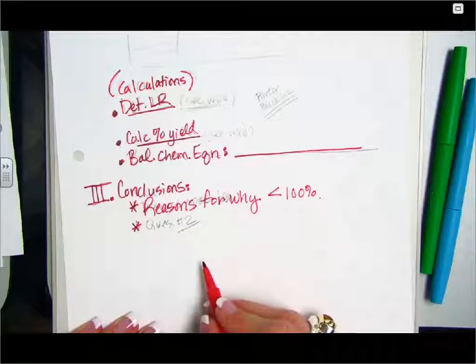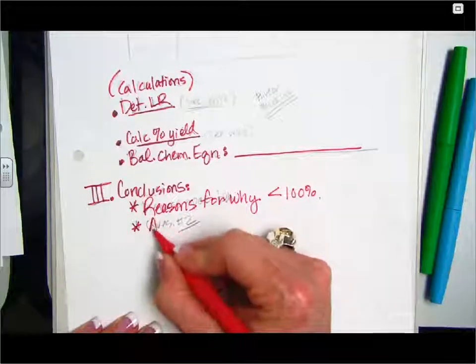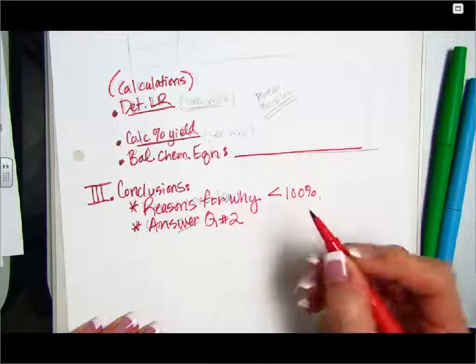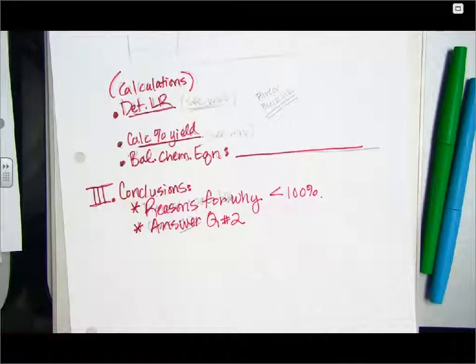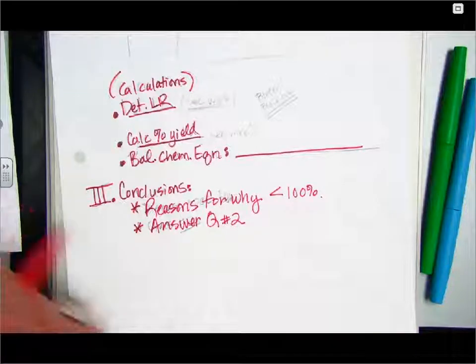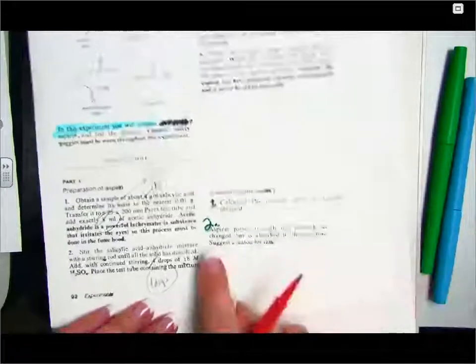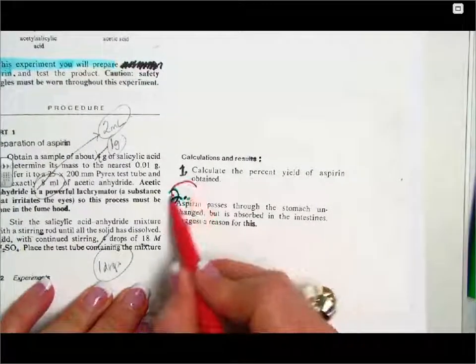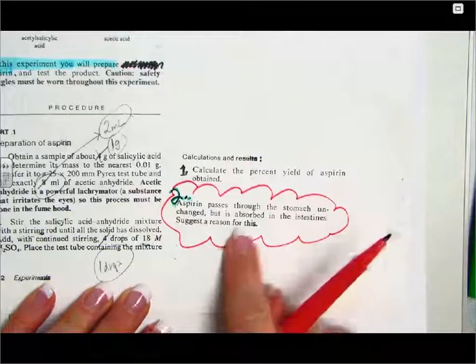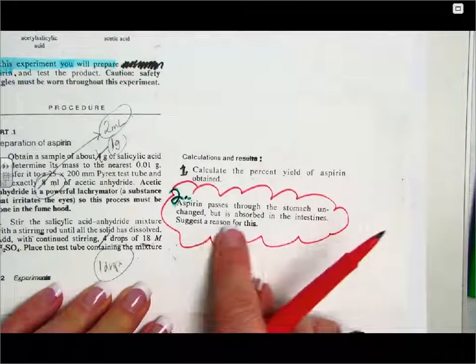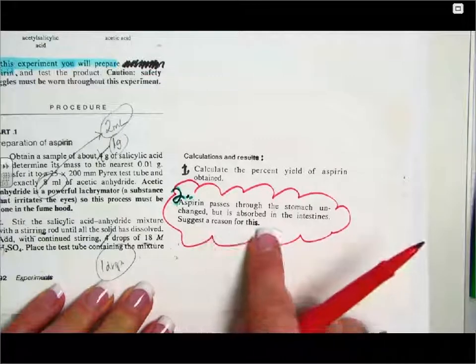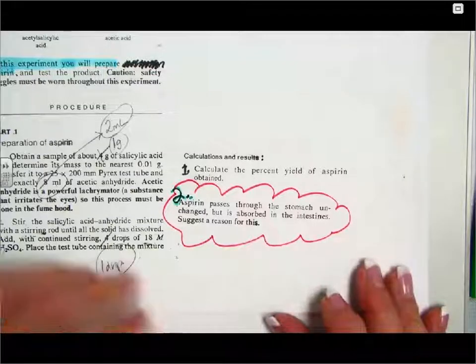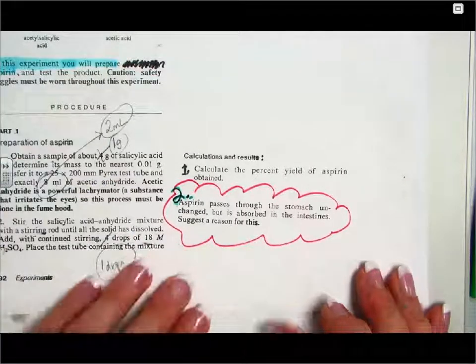Also, in this final section, I want you to answer question number two from your lab sheet. So let me point out where that is. Question two from your lab sheet is here. This is our lab sheet that we use for the procedure. So here's question two. This is what I'm referring to. So the question says, aspirin passes through the stomach unchanged but is absorbed in the intestines. Suggest a reason for this. So I want you to find that answer.